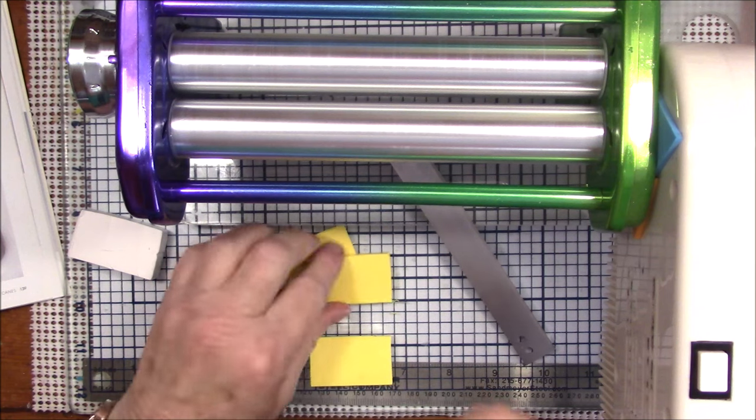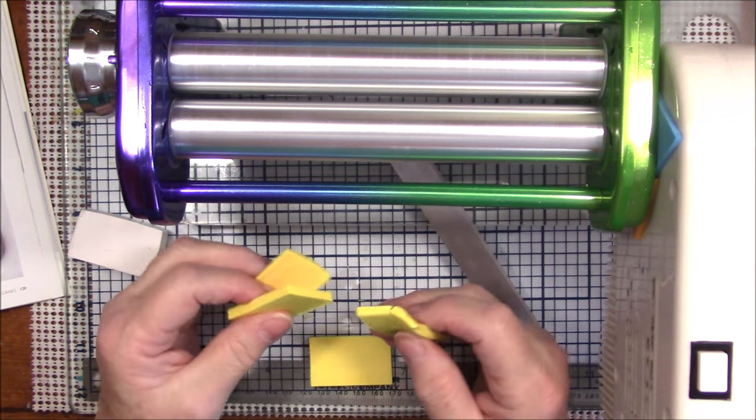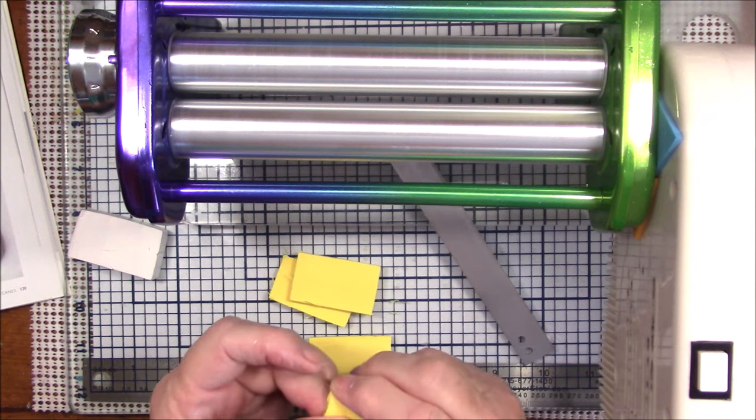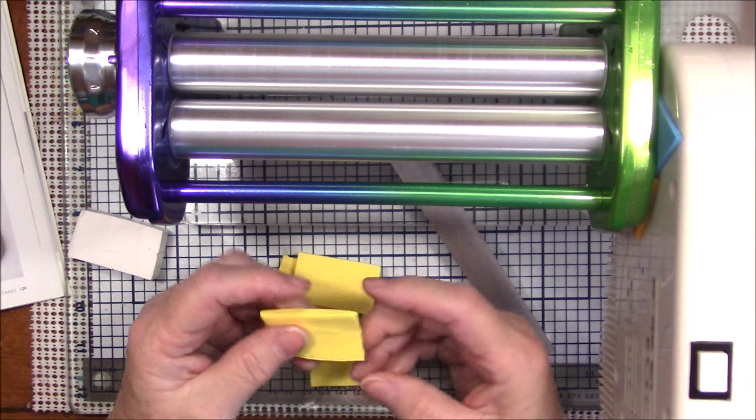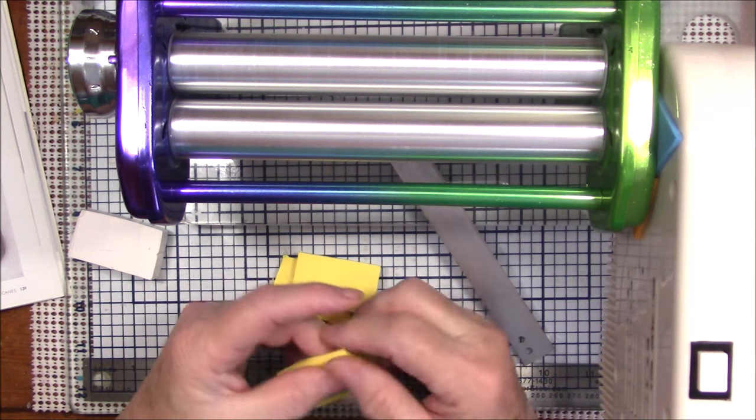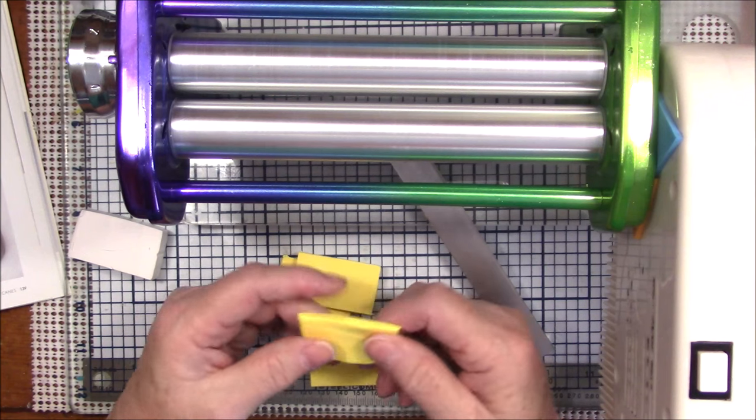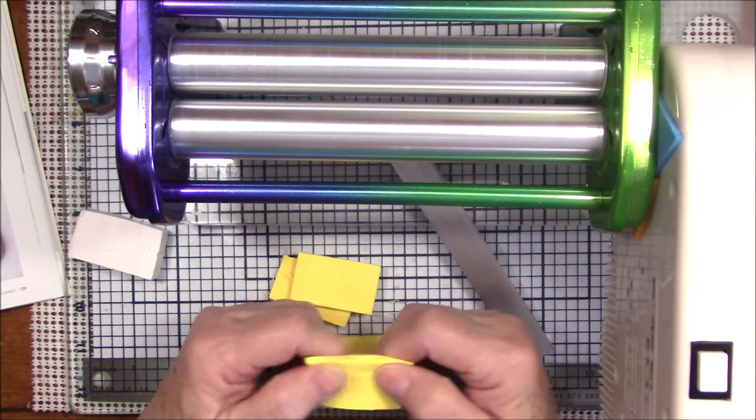But being soft does not mean that it's conditioned. Polymer clay is made up of little teeny tiny particles of PVC and it's put together with a binder, and that's what gives it this clay-like feel.